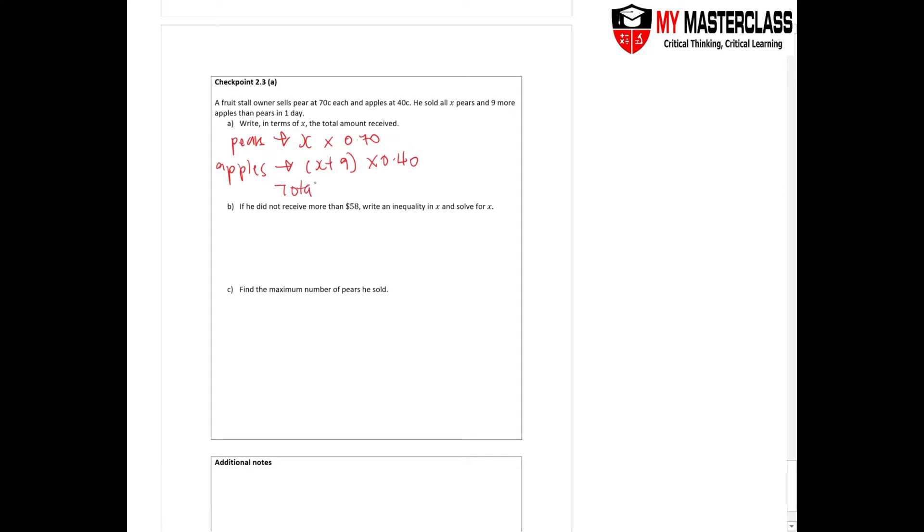So what would my total amount be? Total would be 0.7X plus 0.4X plus 3.6. So combine them together. Your total amount received should be 1.1X plus 3.6.